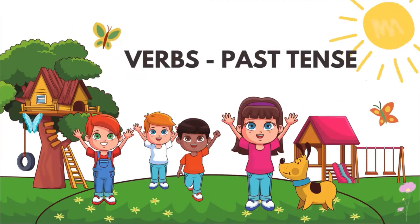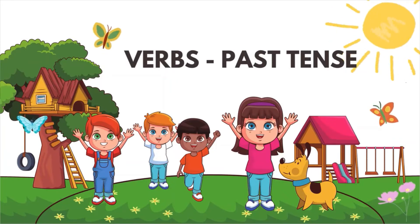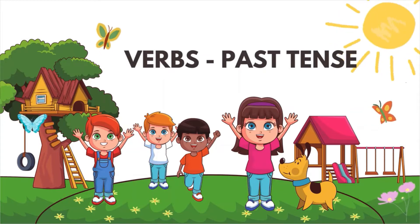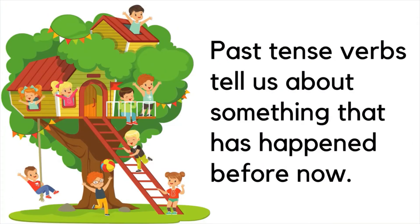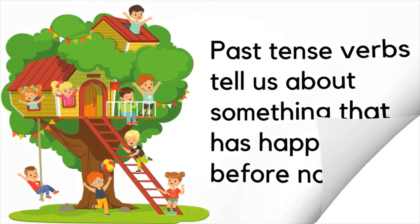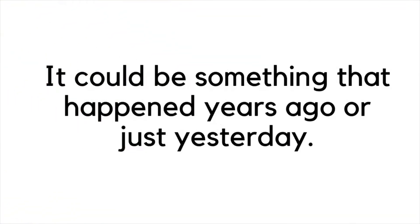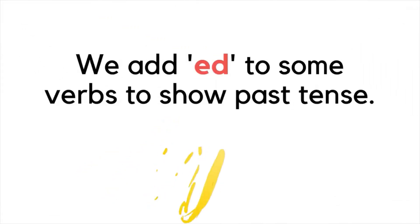Hi kids! Today we will be looking at past tense verbs. Verbs are action words — they tell what a person, animal, or thing is doing or has done. Past tense verbs tell us about something that has happened before now. We add ED to some verbs to show past tense. Let's look at a few examples.